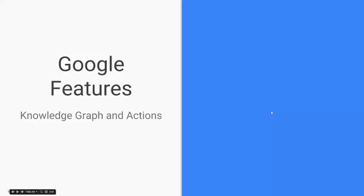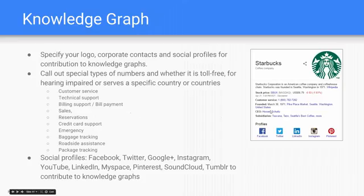The next Google feature we're going to go through is the Knowledge Graph and Actions. The Knowledge Graph is the area that shows up on the right-hand side in search results. In the example here, you can see it's Starbucks. You can customize or manage the brand in this Knowledge Graph using structured data. You can specify the logo, the corporate contacts, as well as the social profiles.